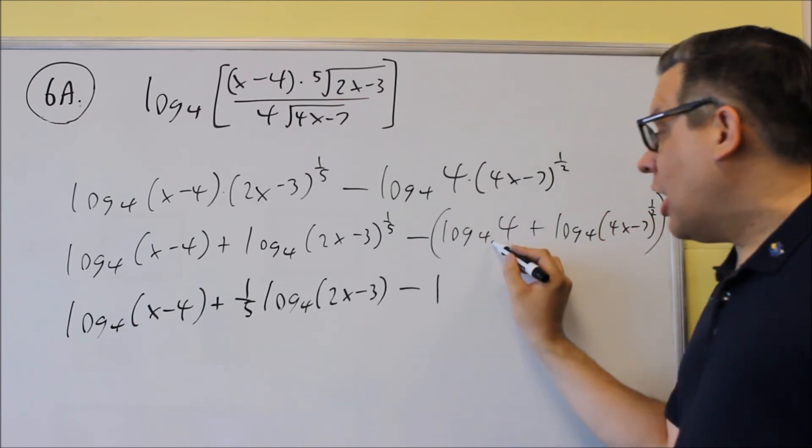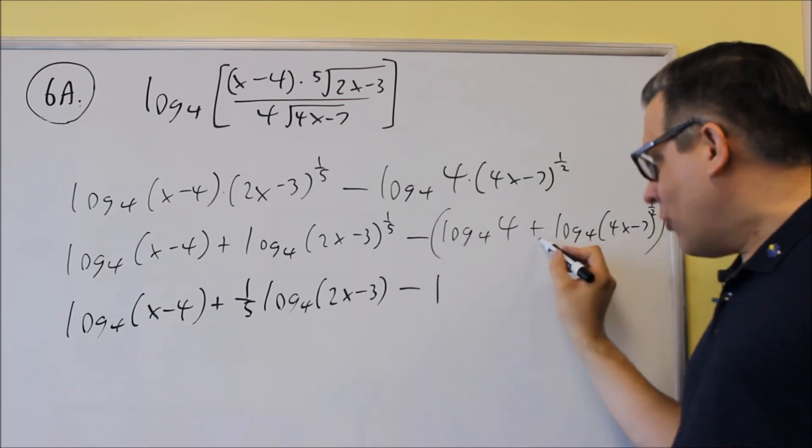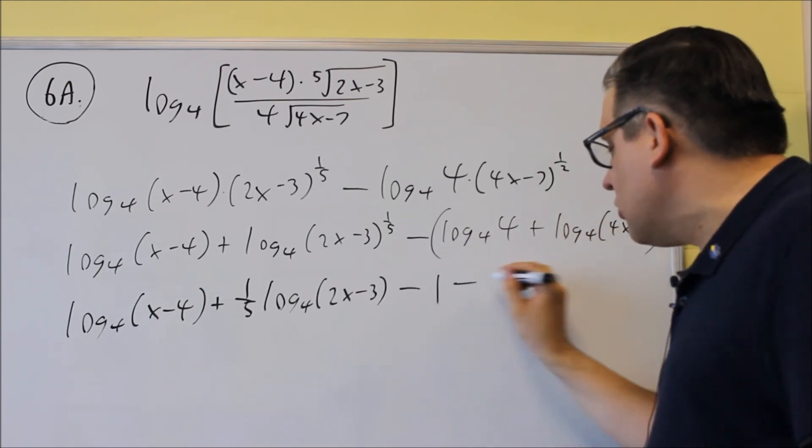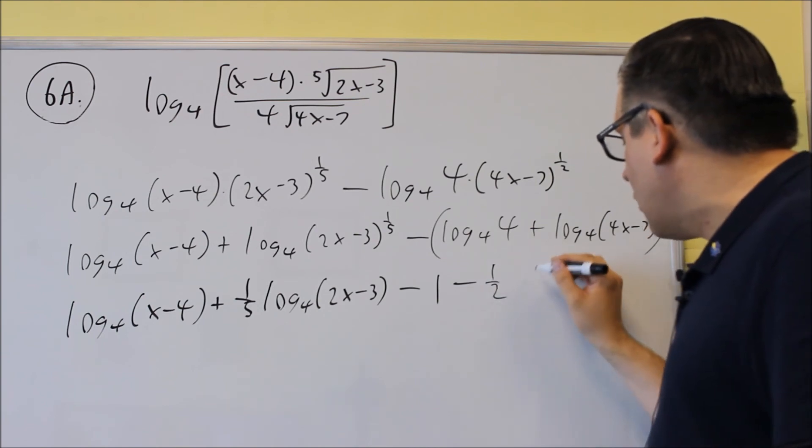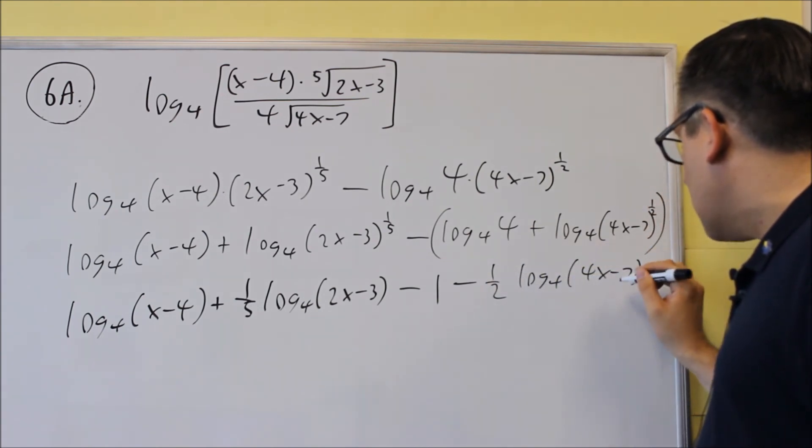So this, you're going to get minus 1, so log 4 of 4 is 1, the negative will change this one over into a negative also, and you're going to bring the 1 half down and we get log base 4 of 4x minus 7.